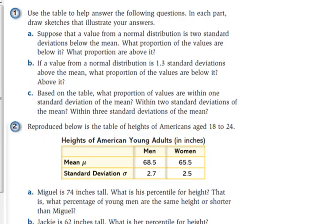We're going to use that table to answer these questions for problem number one. Suppose that a value from normal distribution is two standard deviations below the mean. What proportion of the values are below it? What proportion are above it? Two standard deviations, that's a value that we've worked with. Before having this table, what would be an answer to this question?